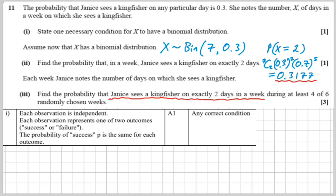And the success probability of that was 0.3177. So one way of reading this sentence in part three is find the probability that we get a success during at least four of six trials. A trial being now a week, and the success condition being that we see a kingfisher on exactly two days in that week.